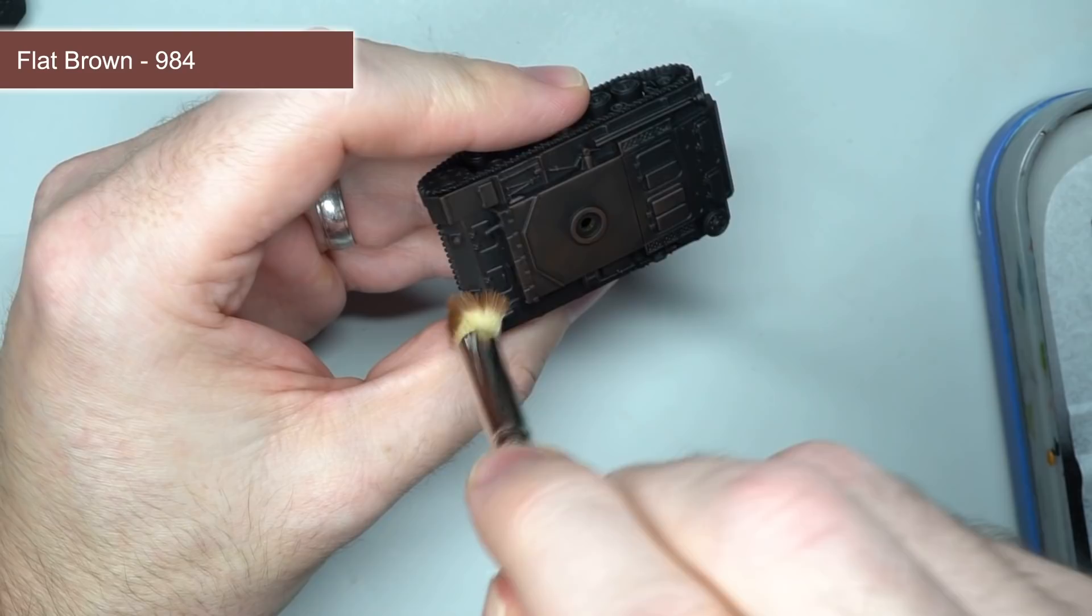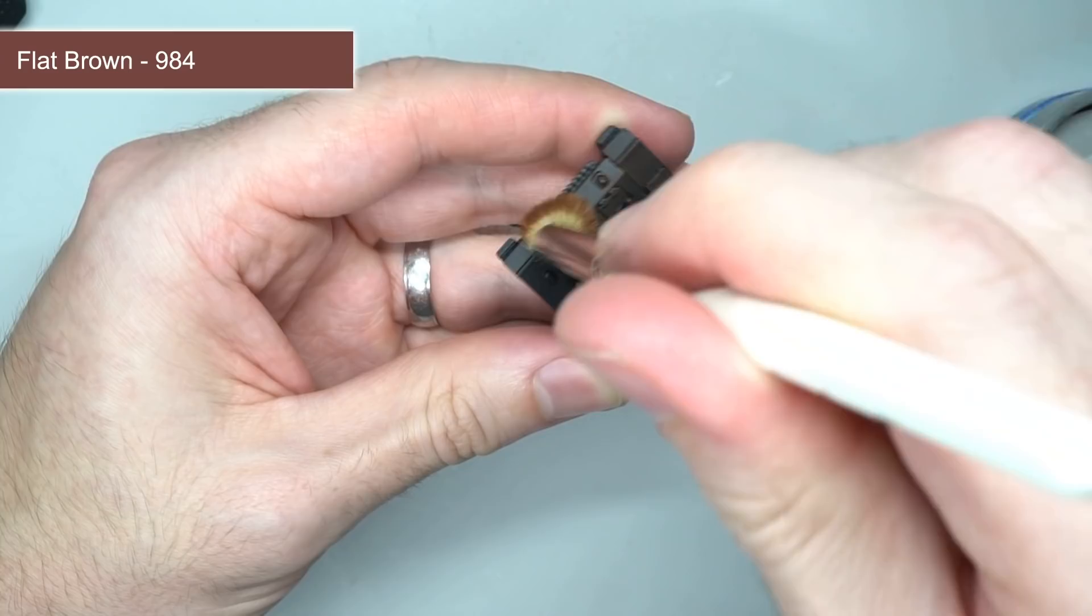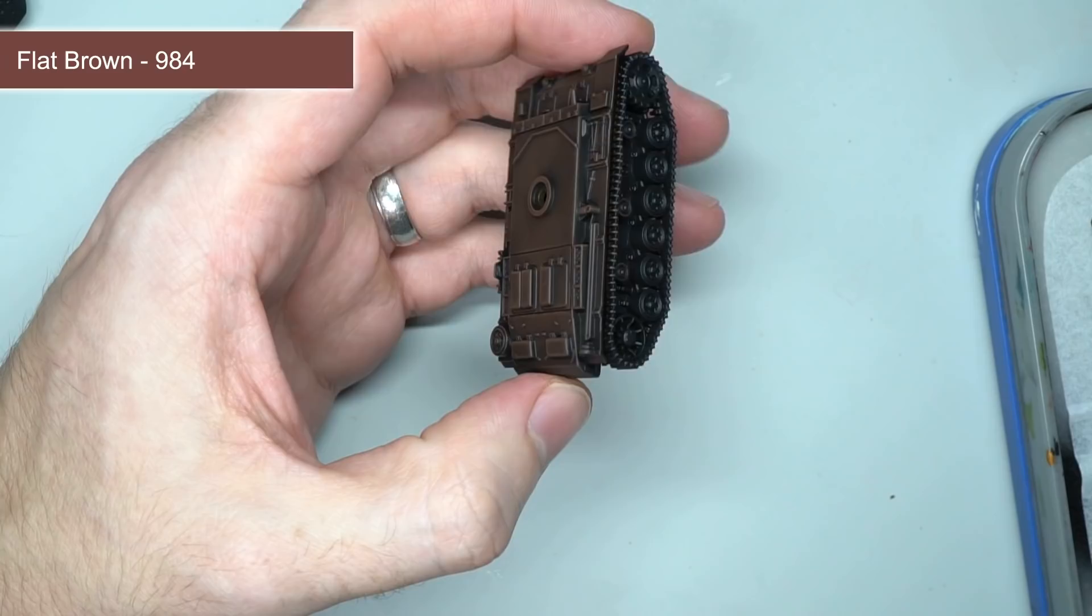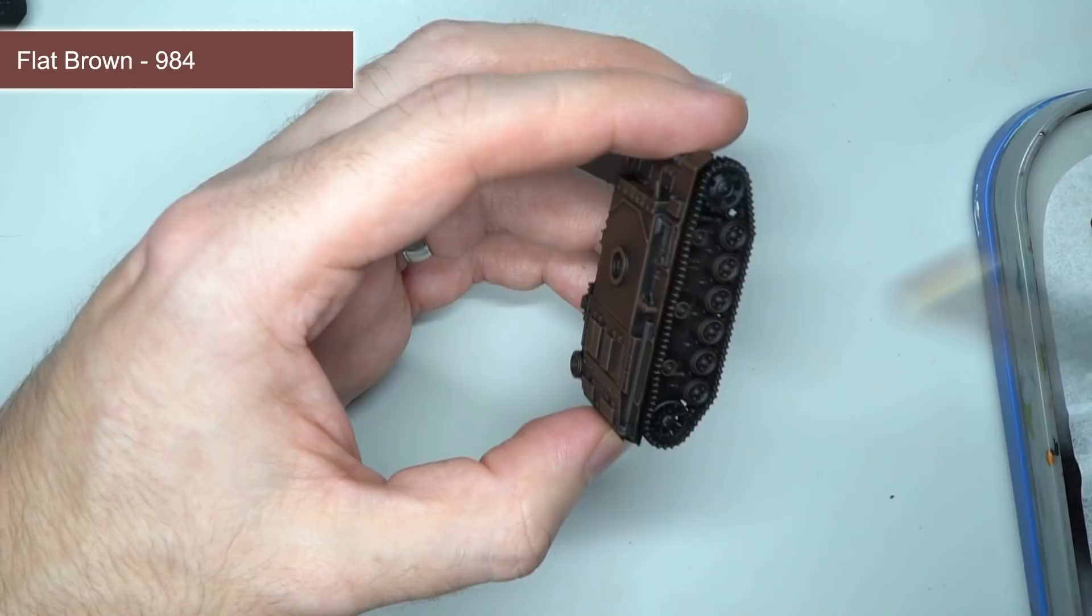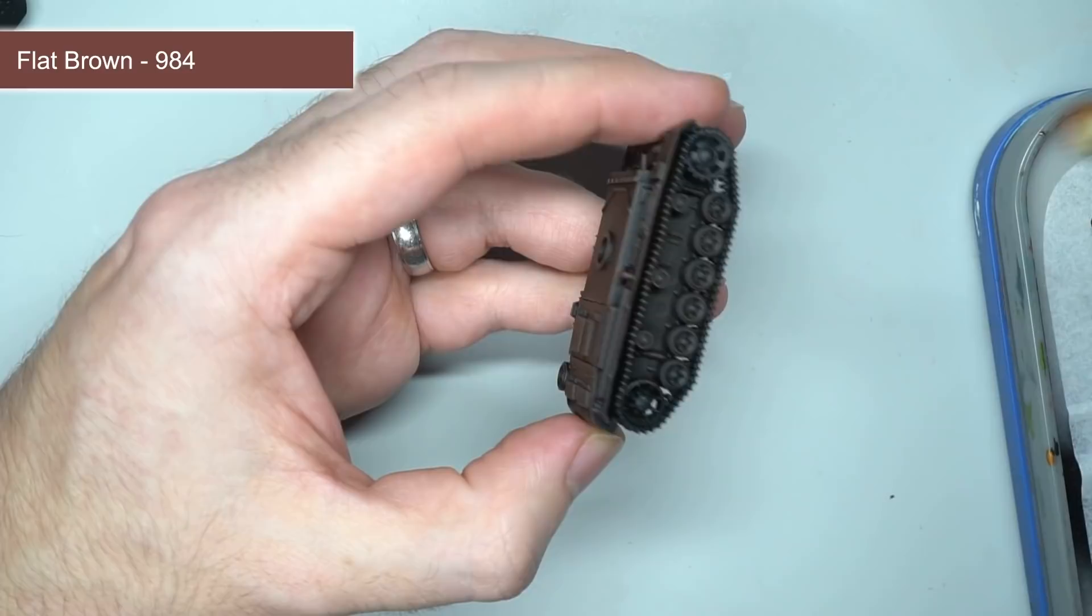This causes the paint to be transferred to the hard-edge details and flat surfaces, but the deeper recesses remain untouched. As I used a black primer, these areas remain black and help create the illusion of shadows.